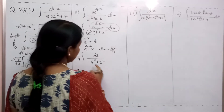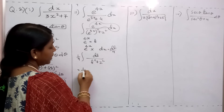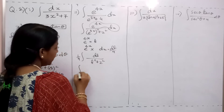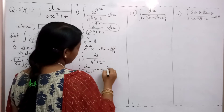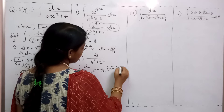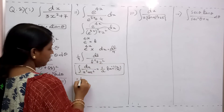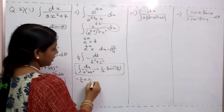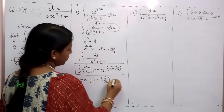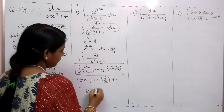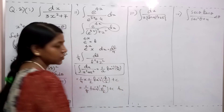Now you can see it is coming in this format: integration of dx by (x² + a²). What is the formula? Integration of dx by (x² + a²) = (1/a) tan⁻¹(x/a). Now instead of x it is t, and instead of a it is 2. So: (1/4) · (1/2) · tan⁻¹(t/2) + c = (1/8) · tan⁻¹(e^(4x)/2) + c. Answer.